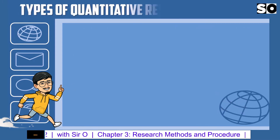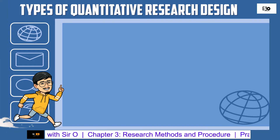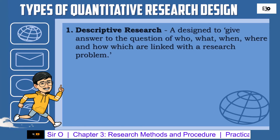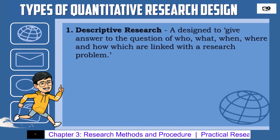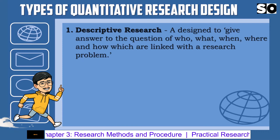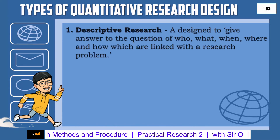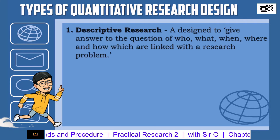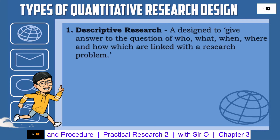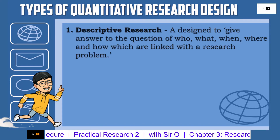Here are the types of quantitative research design. Number 1: Descriptive Research — a design to give answers to the questions of who, what, when, where, and how, which are linked with a research problem. Descriptive research does not answer the question 'why,' because it does not seek to explain why certain things happen. It is applied only to describe what exists and to gather information about the current status of a certain phenomenon. This type of research observes a subject or situation in a natural and unchanged environment.